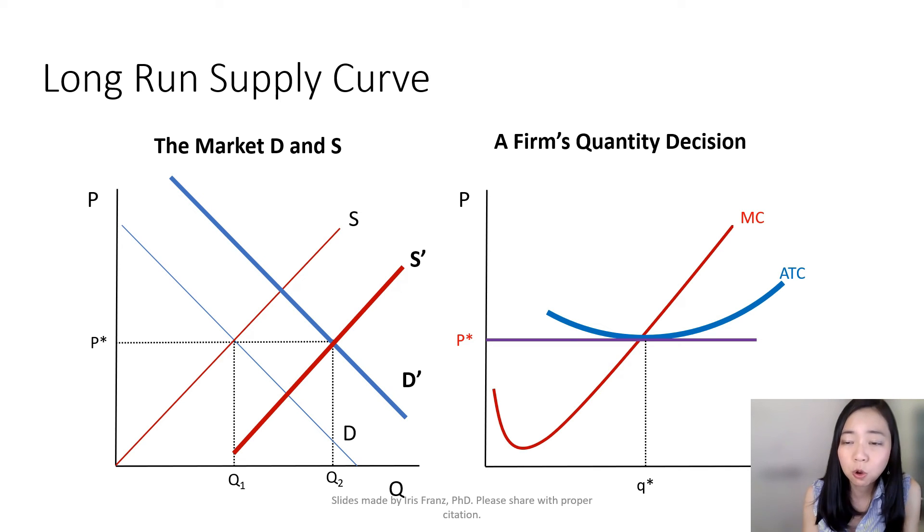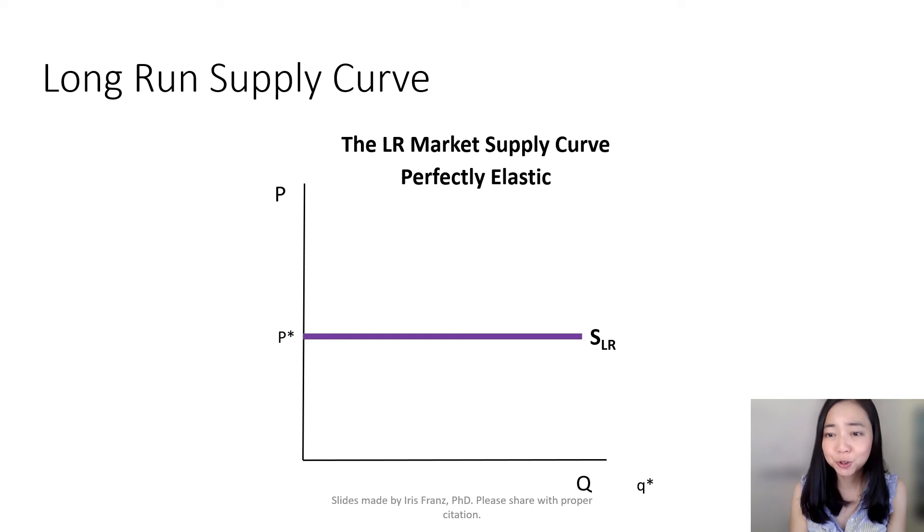And therefore, our long-run supply curve is a horizontal line, S_LR, and the price is at P star. And therefore, here is your long-run supply curve for a perfectly competitive market. It's perfectly elastic and the price is at P star.